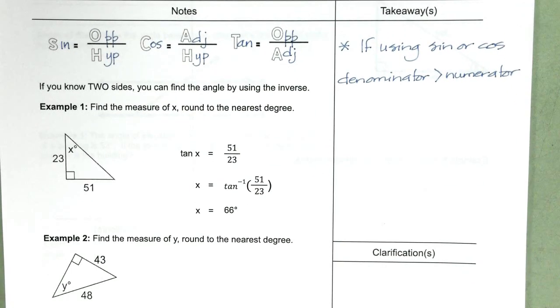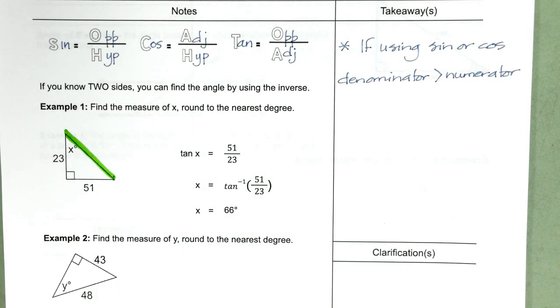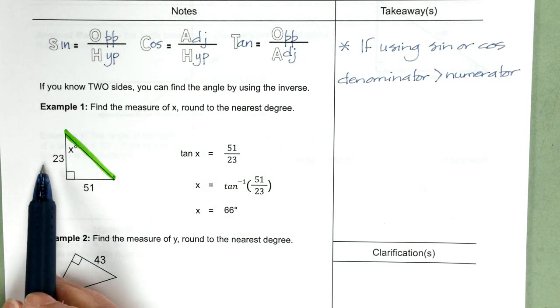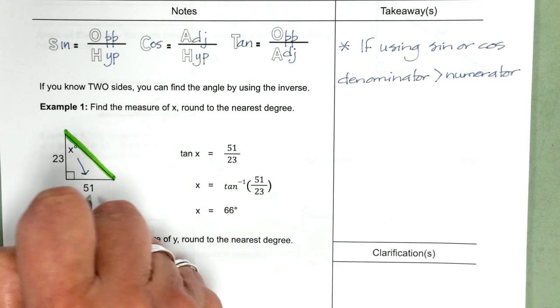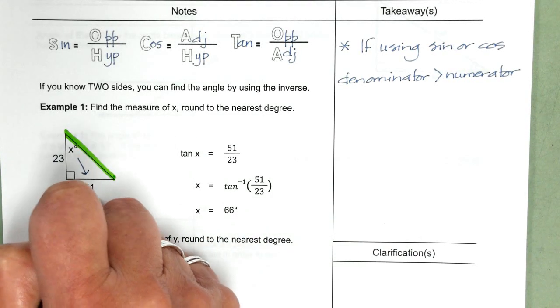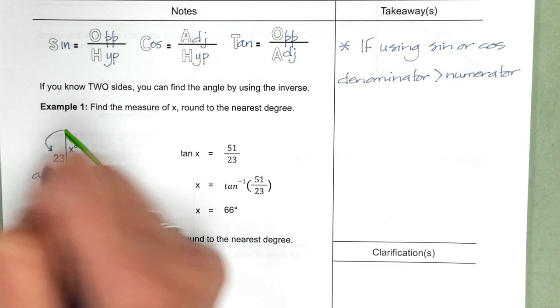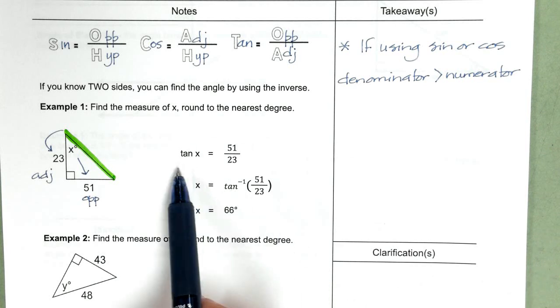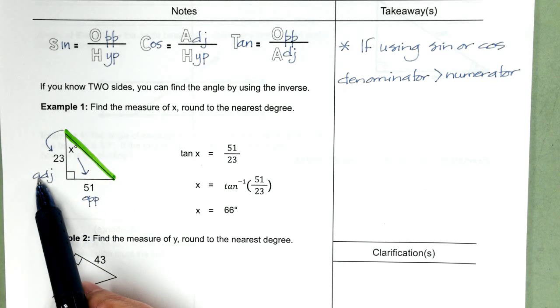So example one, continuing to highlight my hypotenuse. Notice that the values that I'm given are the legs. This is the opposite leg. This is the adjacent. So since there's no hypotenuse involved, we're using tangent. So we're taking the tangent of x equals the opposite over the adjacent.